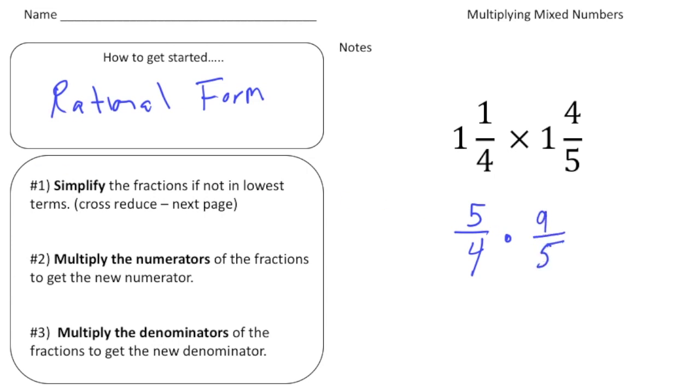Alright, step number two. Simplify the fraction and cross reduce if you can. So these can't be reduced going up and down, but if you notice, we have a 5 and a 5. And I can reduce these by a common factor of 5. So now we've got to look at the 9 and the 4, and that can't be reduced.